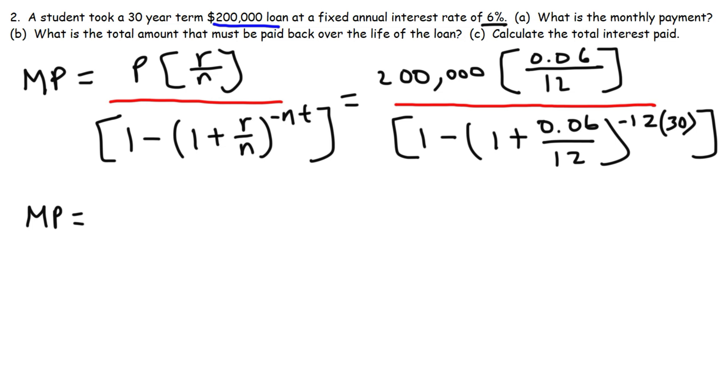200,000 times 0.06 divided by 12. That's 1,000. 1 plus 0.06 divided by 12. That's 1.005. Negative 12 times 30. That's negative 360. So 1,000 divided by parentheses 1 minus parentheses 1.005, close parentheses, raise to negative 360, and then close it again. This will give you a monthly payment of $1,199.10.